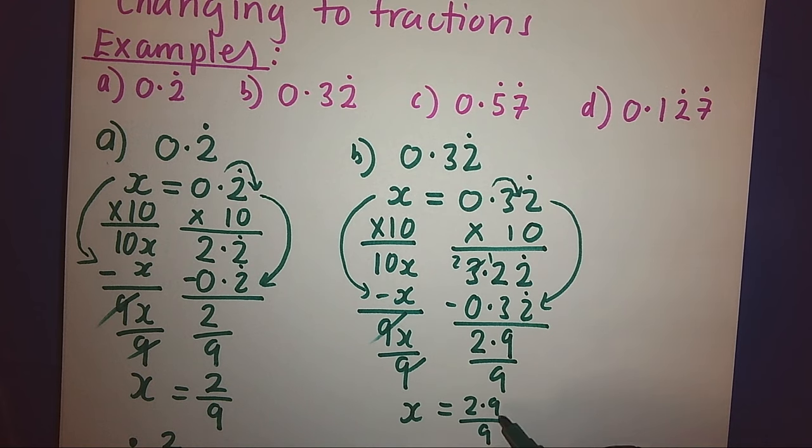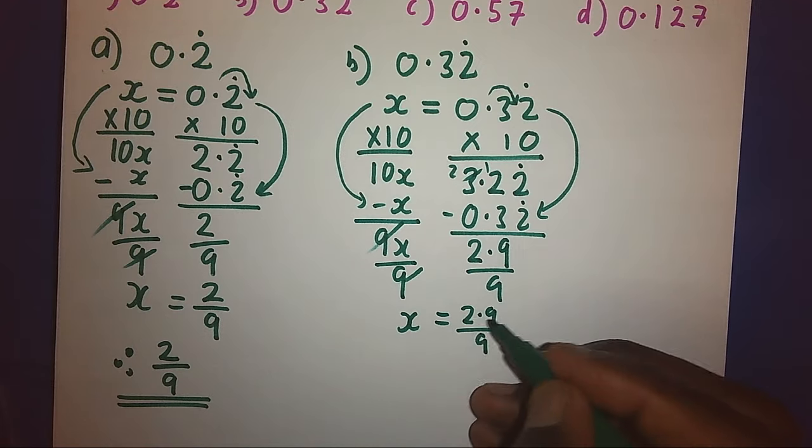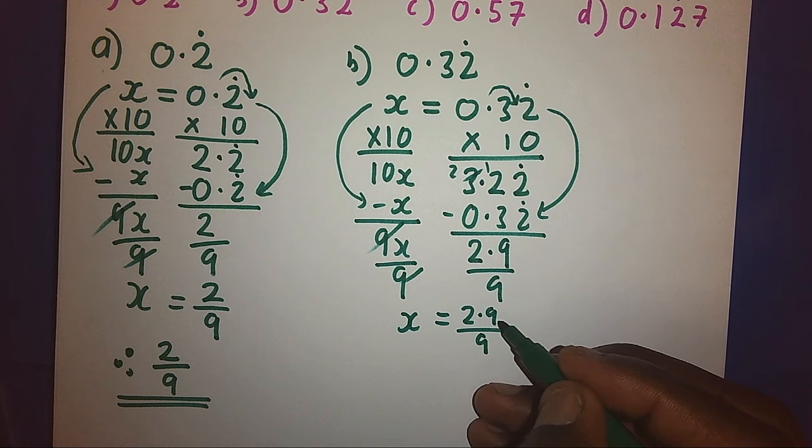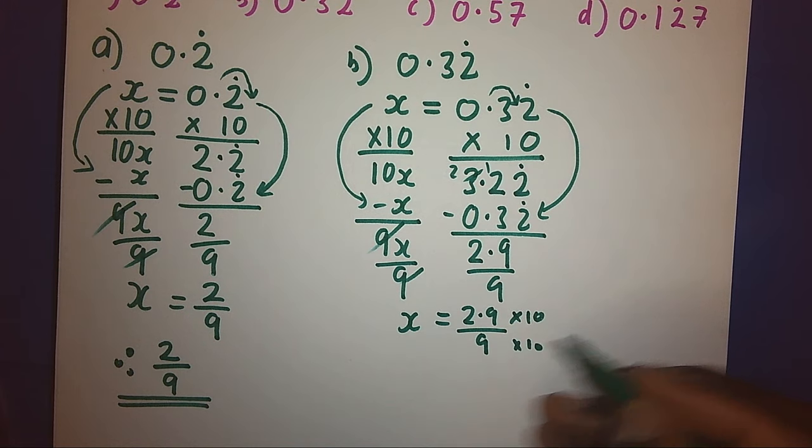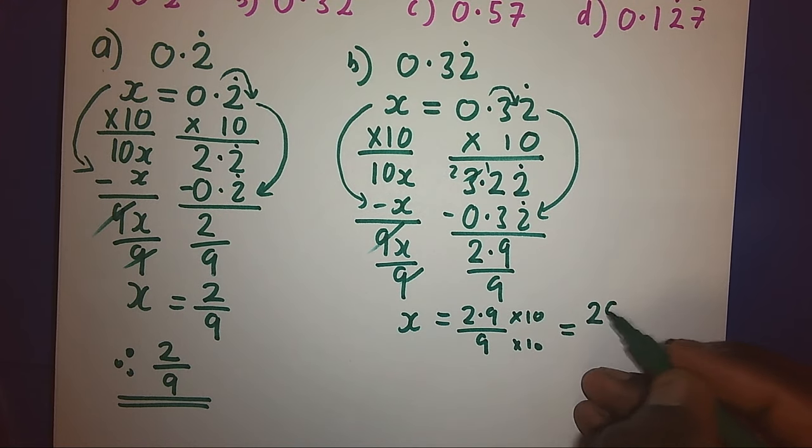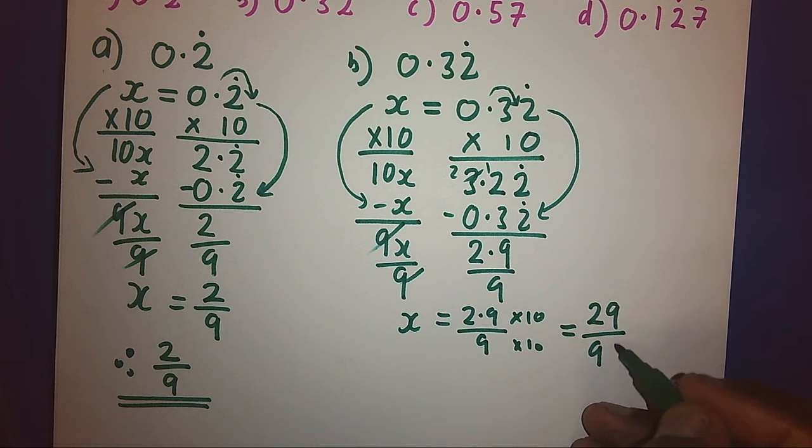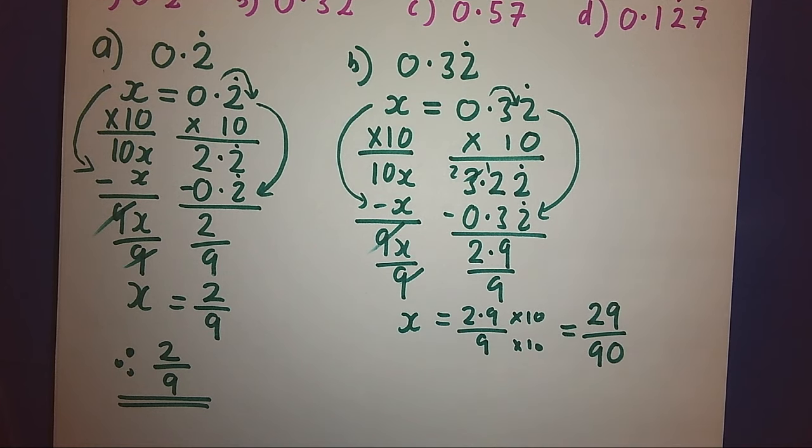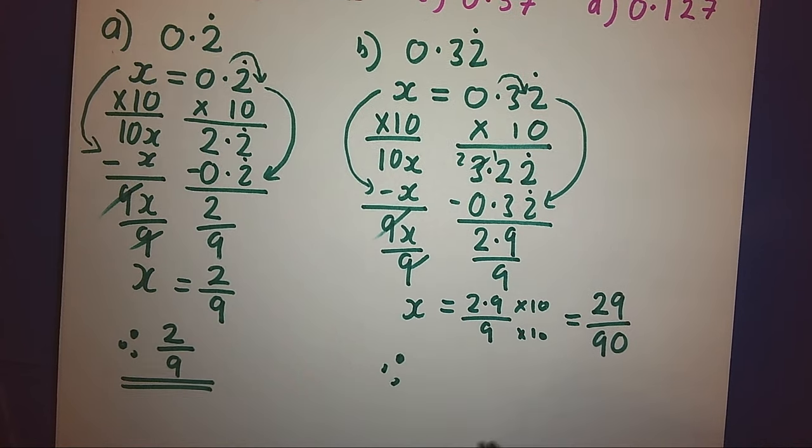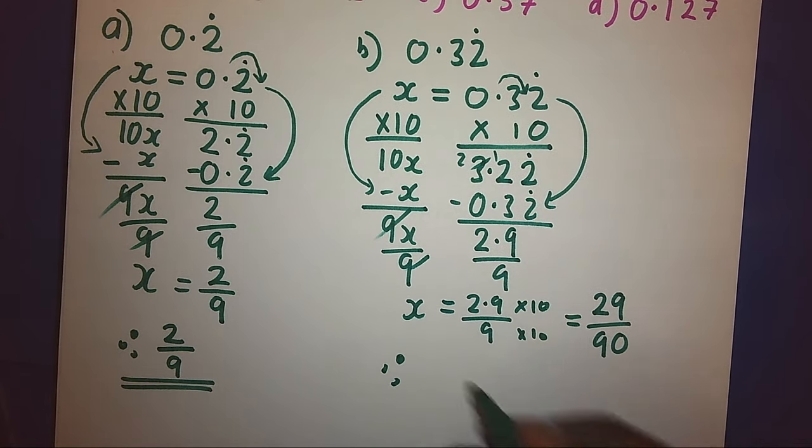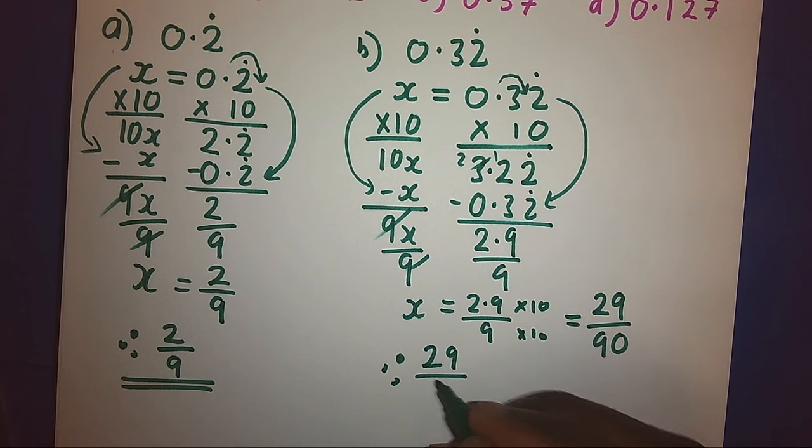We cannot leave 2.9 over 9 because we have decimal and we have fraction. So we shall multiply by 10 to remove the decimal, and we shall get 29 over 90. Therefore, our recurring decimal has become 29 over 90.